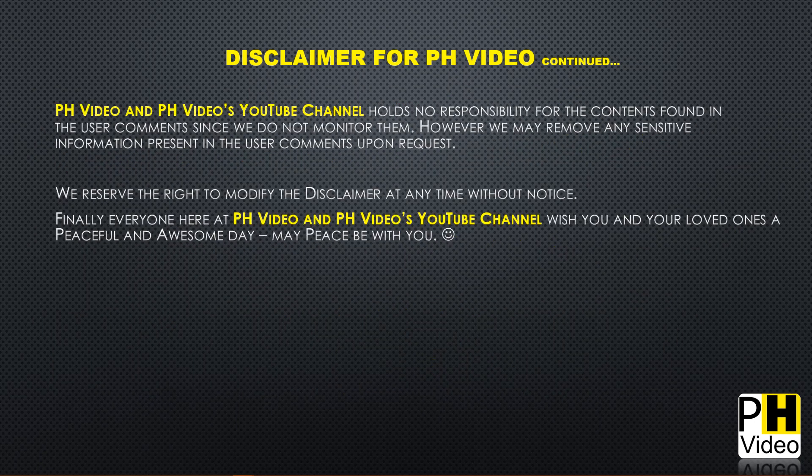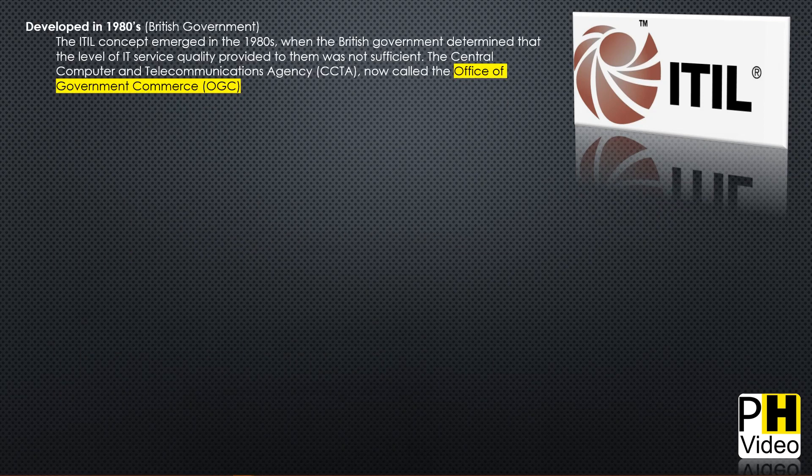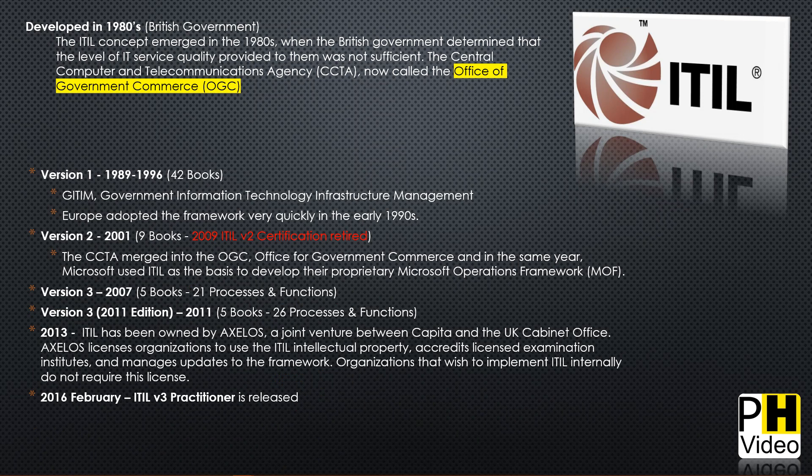ITIL was developed back in the early 1980s and used to be overseen by the Office of Government Commerce. Version 1 officially ran from 1989 through 1996 and was 42 books long. Version 2 came out in 2001 and was 9 books long — a great improvement. Version 2 certification was officially retired in 2009. Version 3 first came out in 2007 — it was 5 books, 21 processes and some functions long.